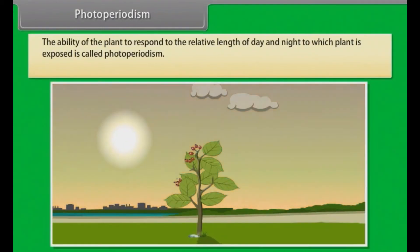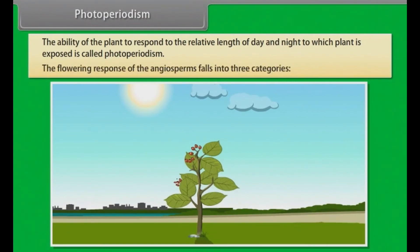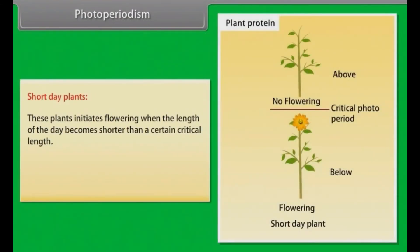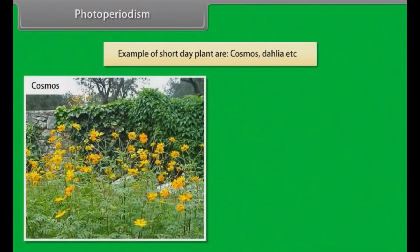Photoperiodism. The ability of plants to respond to the relative length of day and night to which the plant is exposed is called photoperiodism. The flowering response of the angiosperms falls into three categories. Short day plants: these plants initiate flowering when the length of the day becomes shorter than a certain critical length. If these plants expose for the length greater than the critical length then they will remain vegetative. Example of short day plants are cosmos, dahlia, etc.